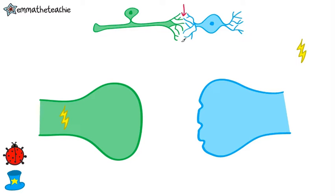If you look very carefully, you'll notice there is a tiny gap between these two neurons. This is called a synapse. Here is a zoomed-in version of a synapse.